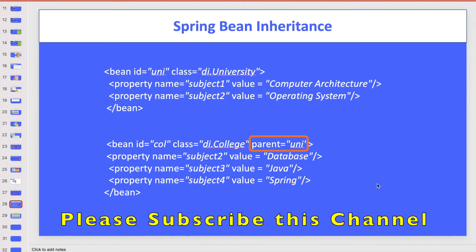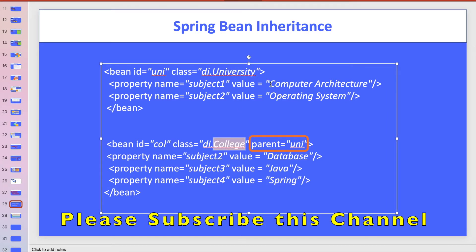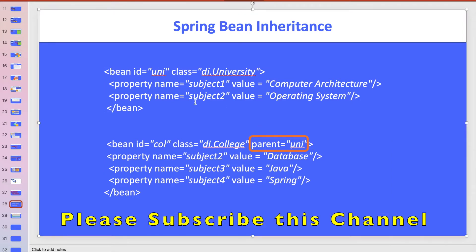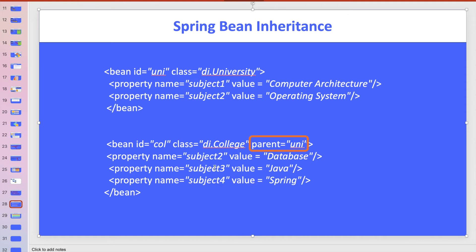In this configuration, I have a University class and a College class. University has two subjects: Computer Architecture and Operating System. A child can take any or all from the university. The magic word here is 'parent', set equal to the parent bean ID. Here, the parent bean ID is 'uni', so for the College bean, parent is set to 'uni'. Even though subject one is not defined in College, it will take subject one from the parent, which is Computer Architecture.